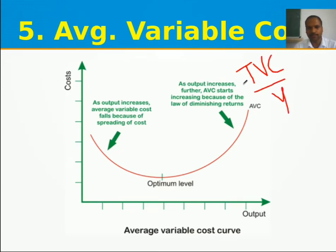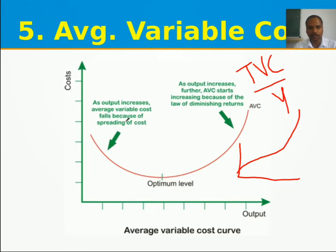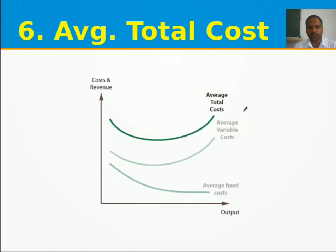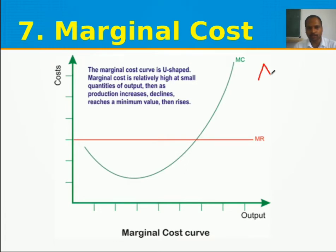Average variable cost (AVC) = TVC ÷ output. Initially the variable cost per unit is low; as production increases the AVC falls, giving a U-shaped curve. As output increases, AVC falls due to spreading of cost, but after the optimum level it begins to increase again. Average total cost (ATC) is the addition of AFC and AVC, giving a flattened U-shaped curve.